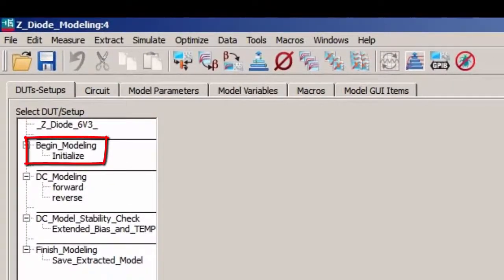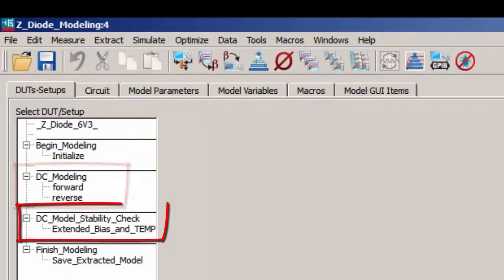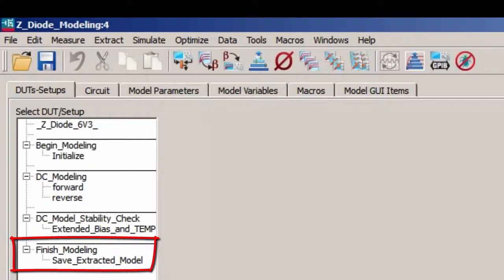After a quick initialization, the DC forward and reverse modeling is performed, followed by an optional model stability check related to extended DC bias and temperature simulations. However, due to limited time, this stability check is not covered by this video but described in details in the download material. Finally, the optimized model is saved to a SPICE deck. Let's now go step by step.